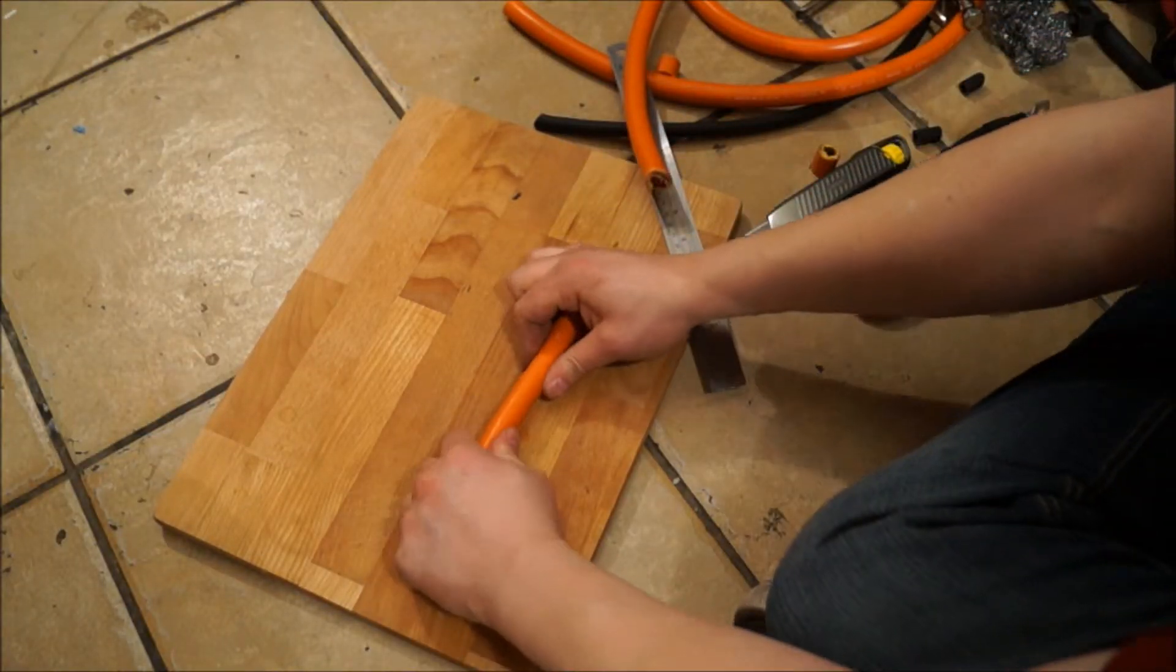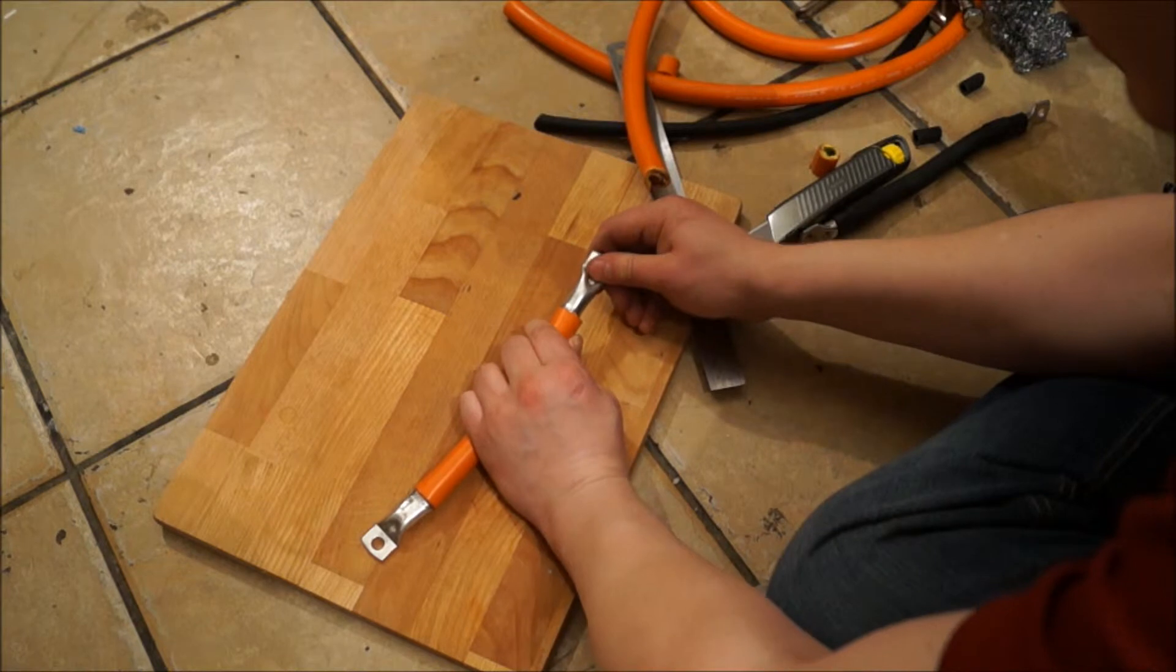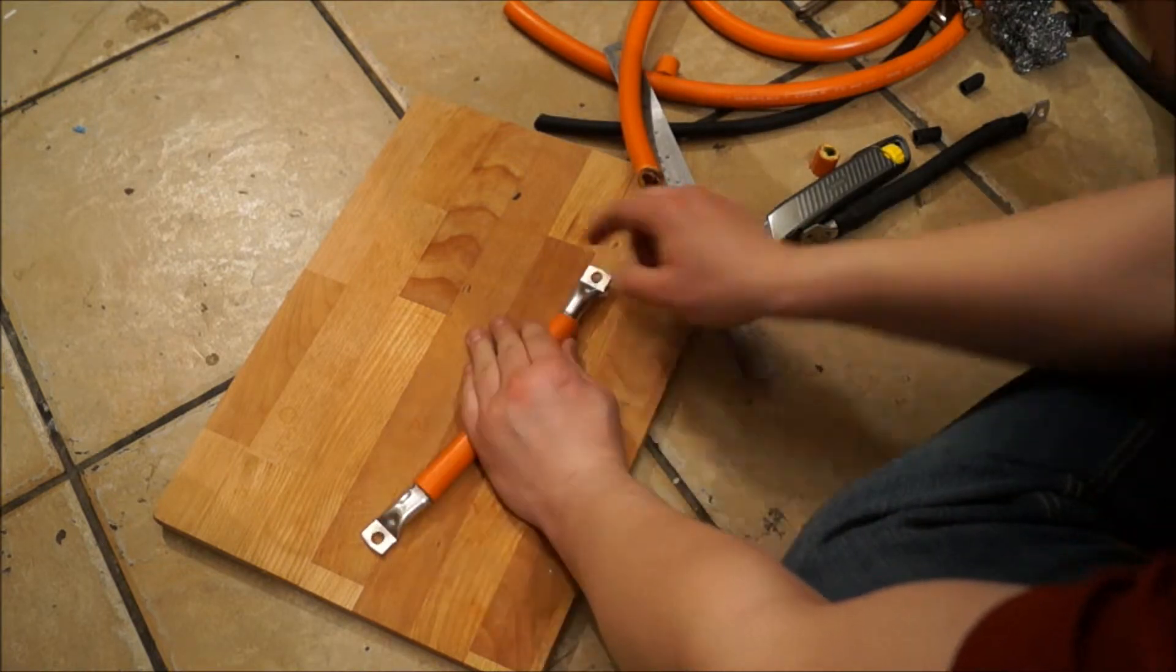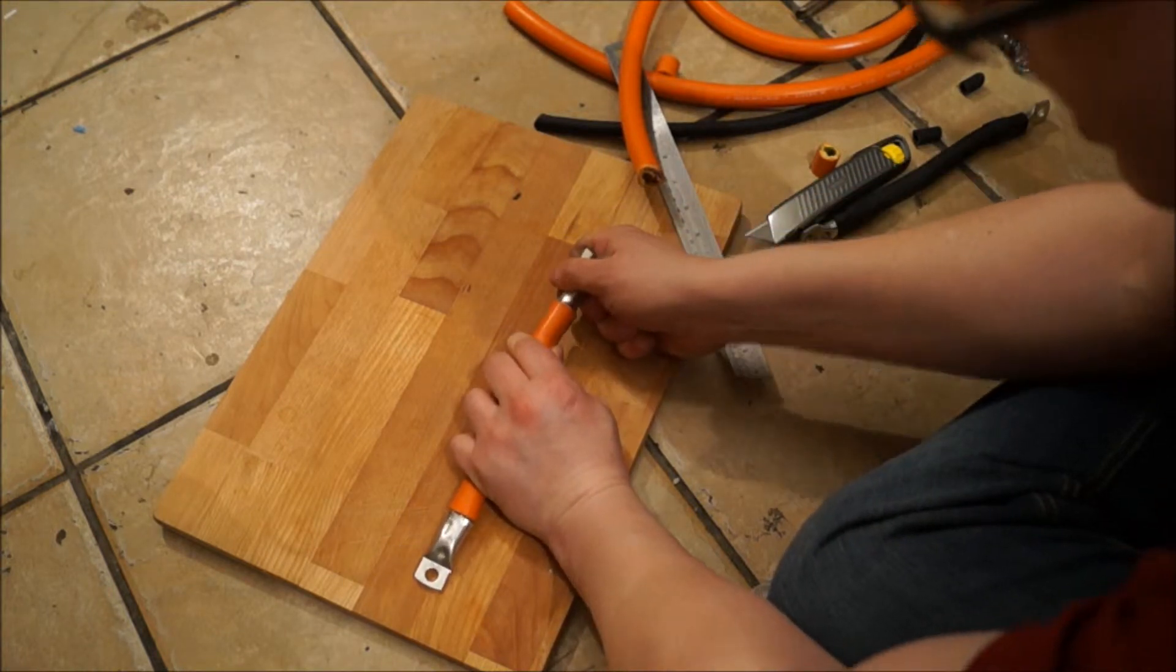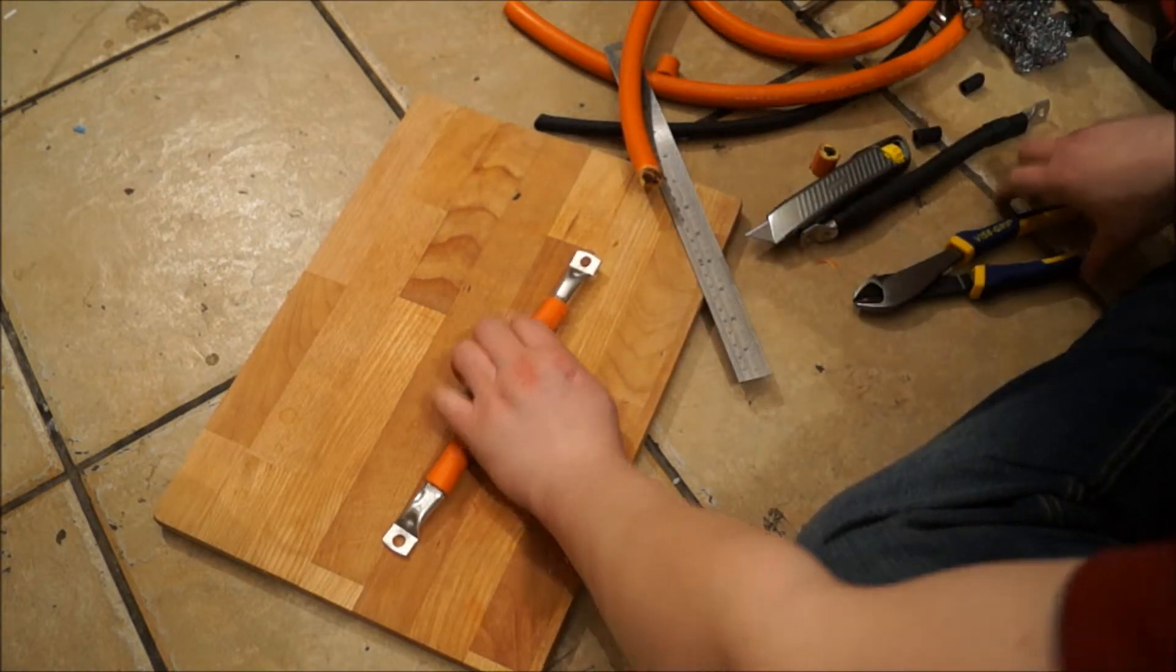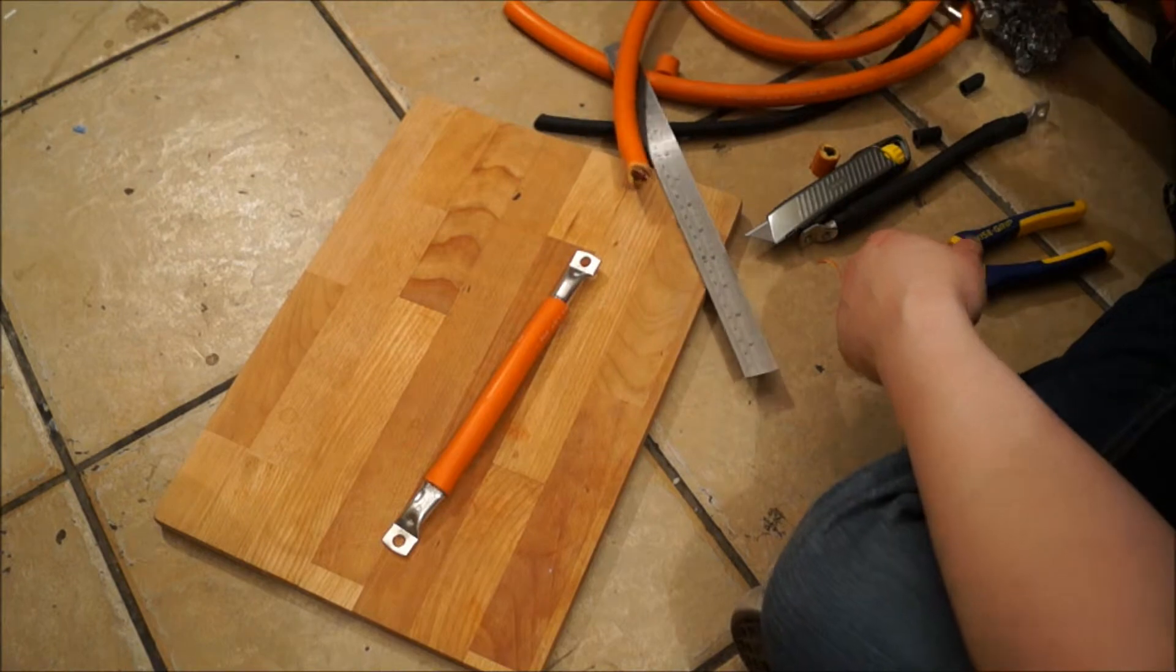So try and get the cables straight before you start crimping. You want both these terminals facing the same way because once you've crimped them, it's very difficult to get them twisted around. Getting more grips.